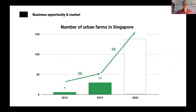As for the business opportunity, there were six urban farms in 2016, and that number has multiplied by five to 30 farms just last year. With the same rate of growth, we can expect 150 urban farms by the end of 2022. We believe it is crucial for us to have a greater local supply of food as part of food security, and our solution helps workers be more productive and farms produce more crops, contributing to that goal.